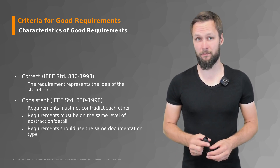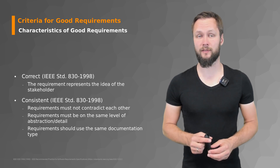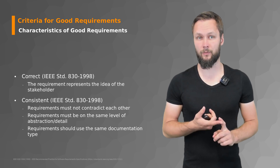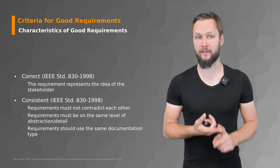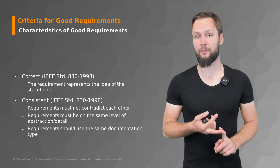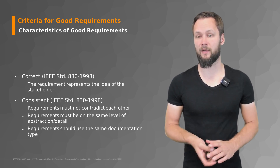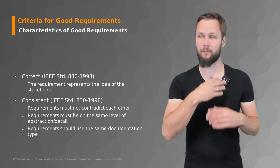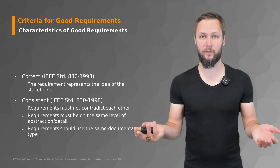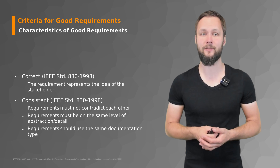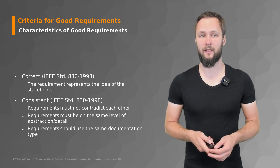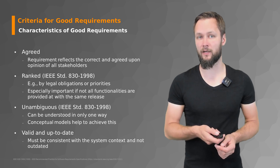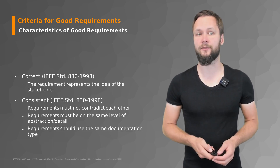Consistency is also among the really important criteria. Requirements must not contradict each other. They must be at the same level of abstraction and detail, and should use the same documentation type where applicable. You do not want to represent two requirements dealing with certain system behaviors using two different documentation types, because that often leads to inconsistencies. Consistency is closely related to the 'agreed upon' part, so there are interdependencies here.